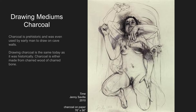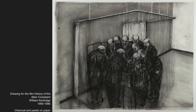Another drawing medium is charcoal. Charcoal is prehistoric and was even used by early man to draw on cave walls — a lot of the drawings of buffalo and lions found in southern France are charcoal. Drawing charcoal is the same today as it was historically; charcoal is made from charred wood or charred bone. This charcoal drawing by Jenny Saville shows what charcoal can do — it can get very smudgy and very dark.